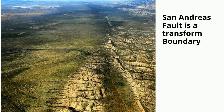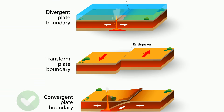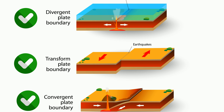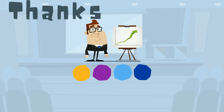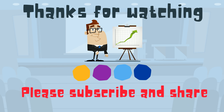So there we go — three types of plate boundaries: convergent, divergent, and transformed. Thanks for watching. Moo Moo Math uploads a new math and science video every day. Please subscribe and share.